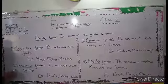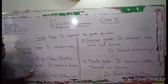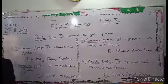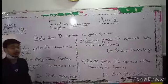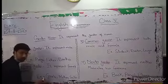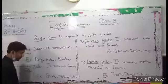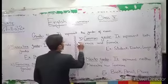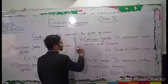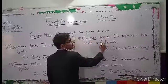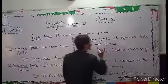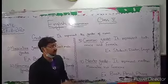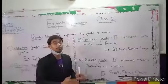The second type is Feminine Gender. It represents female gender. For example: Girl — female. Mother, Sister, Daughter — all female.